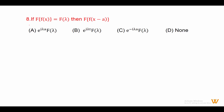Eight: if the Fourier transform of fx is F(lambda), then the Fourier transform of f(x minus a) is e raised to minus i lambda a times F(lambda). Answer is option C.